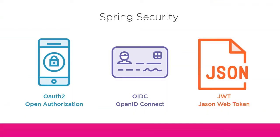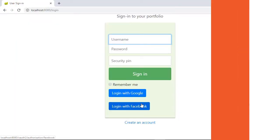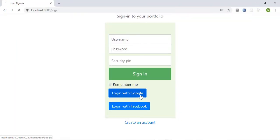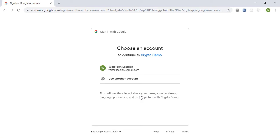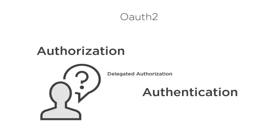OAuth 2, OpenID Connect and JSON Web Tokens make it easy for your users and services to securely access your application without having to remember or provide their passwords. That's powerful and can significantly improve user experience, streamline your registration process and make your application more secure.